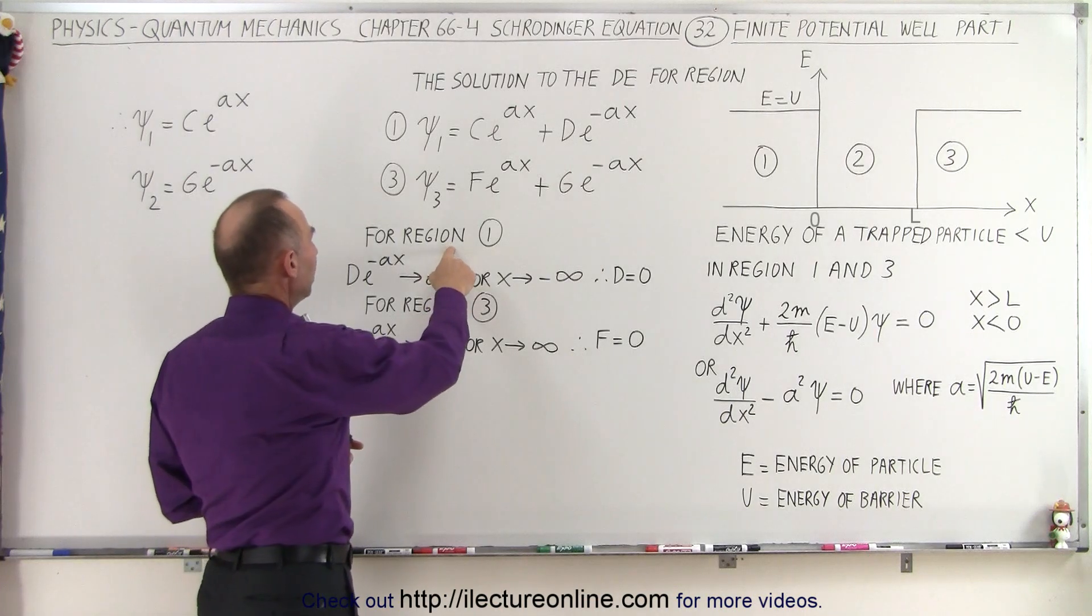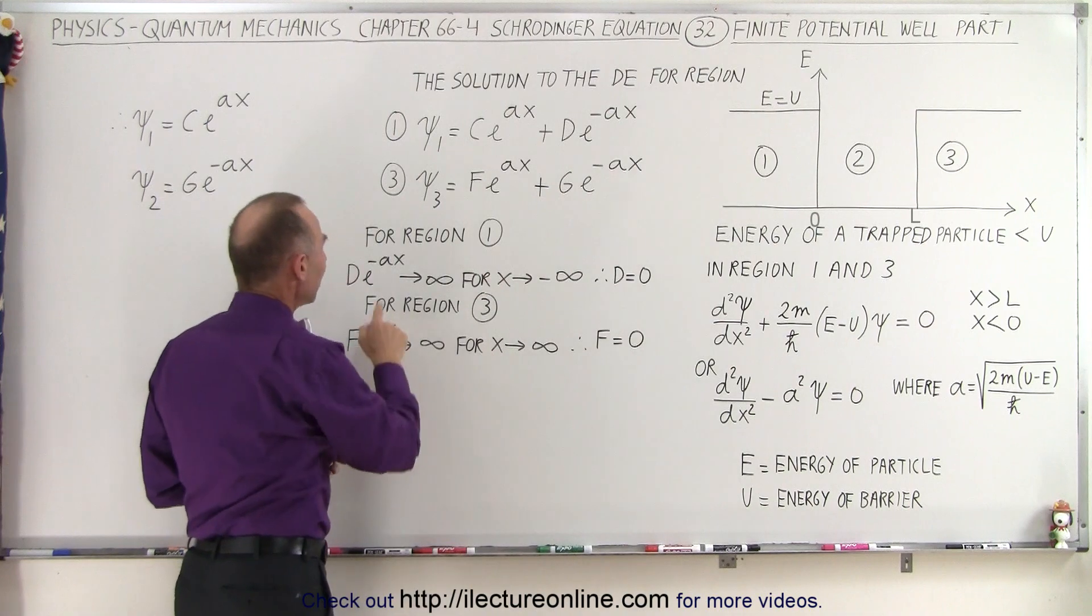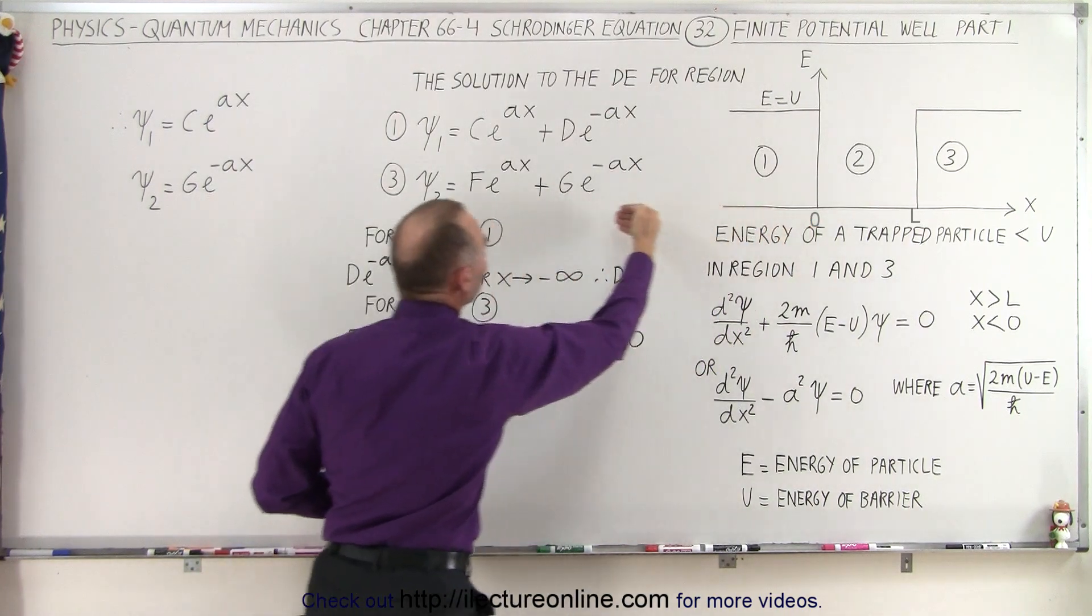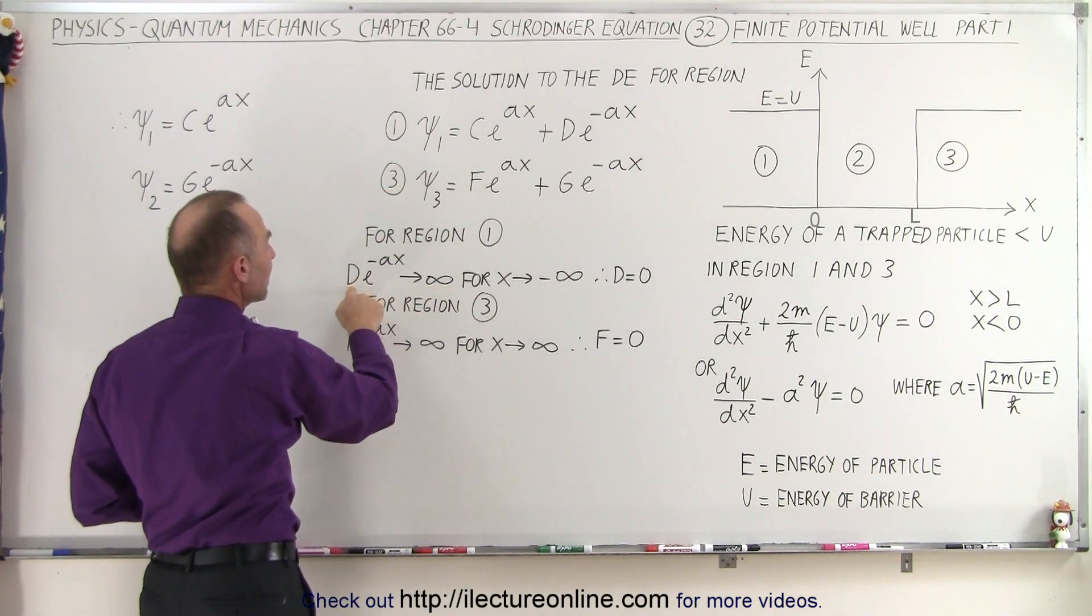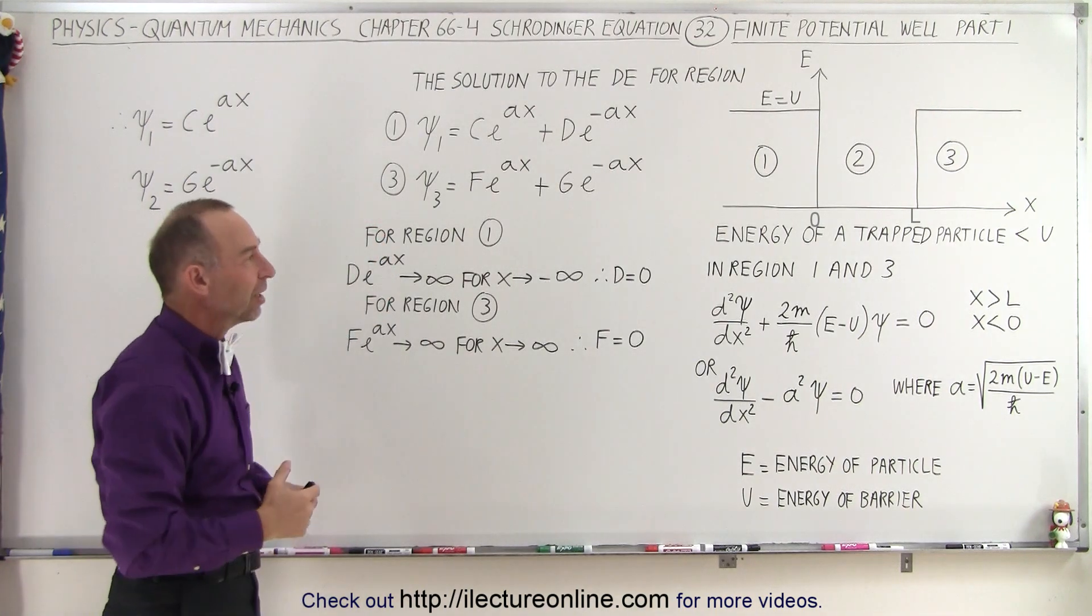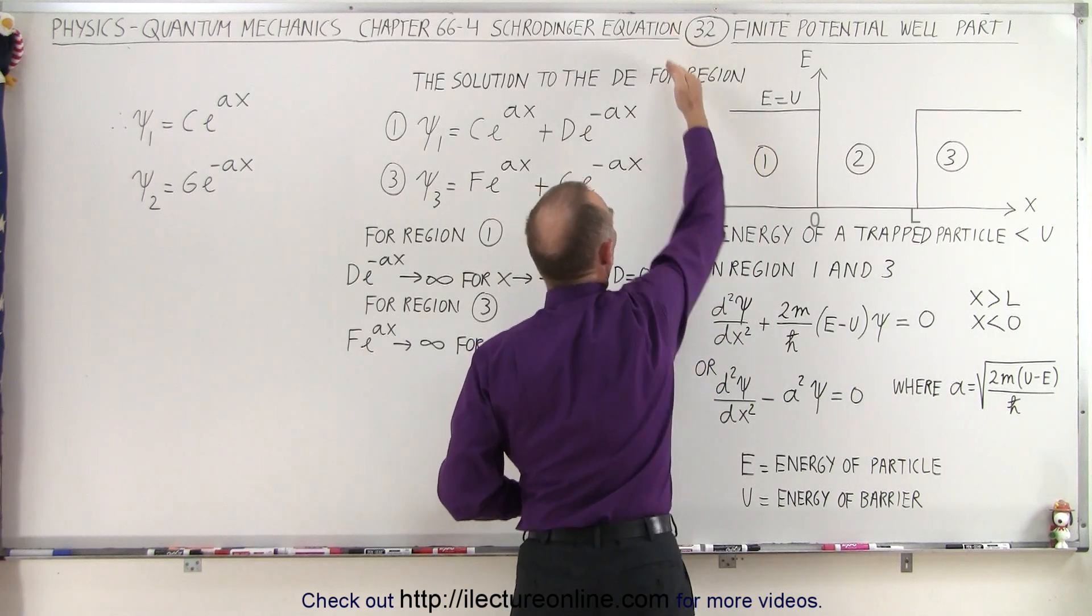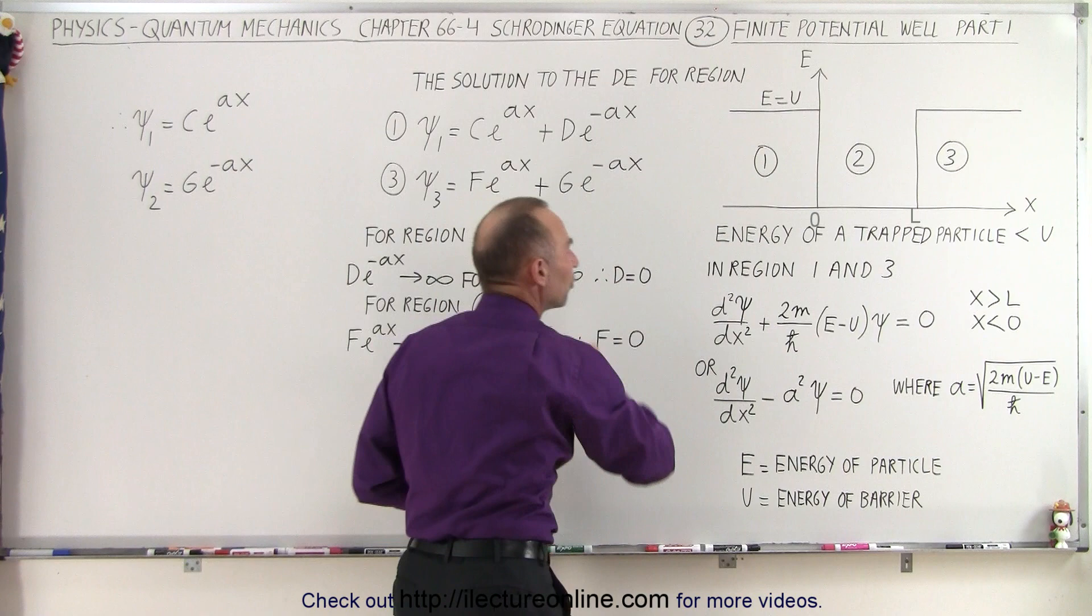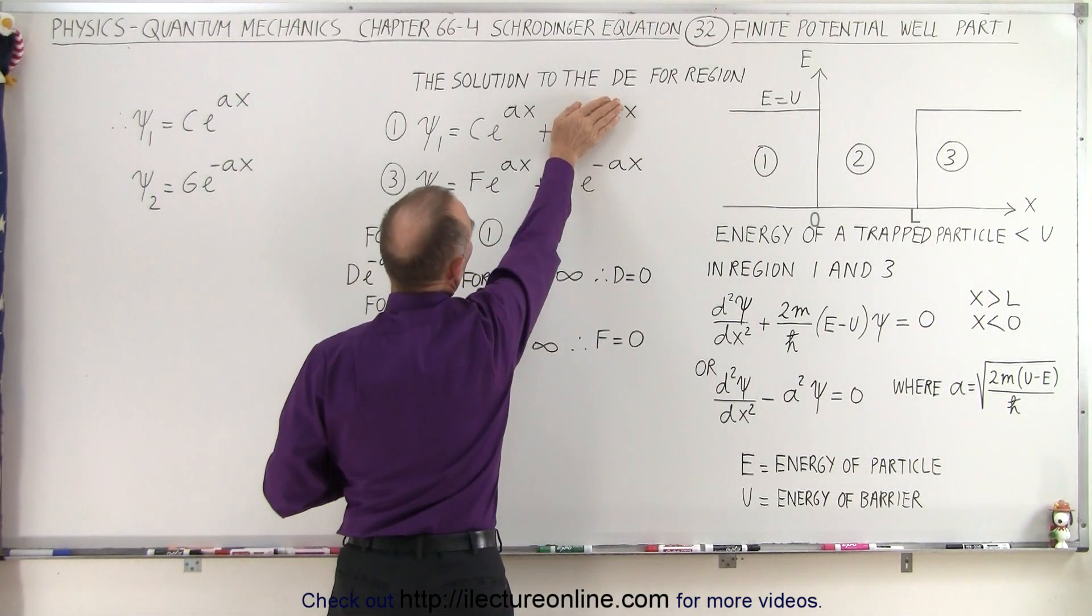If we're in region 1, and we take a look at the portion right here, d e to the minus ax, if we allow x to go to negative infinity, so if we go far enough to the left where x becomes a very large negative number, then this quantity, d e to the minus ax, will also reach infinity. And therefore, that doesn't make a lot of sense. In other words, the solution then would become infinite over in this region right here. It doesn't make a lot of sense, so we're going to let d equal 0 to take that away as a possible portion of the solution, so that this then disappears.